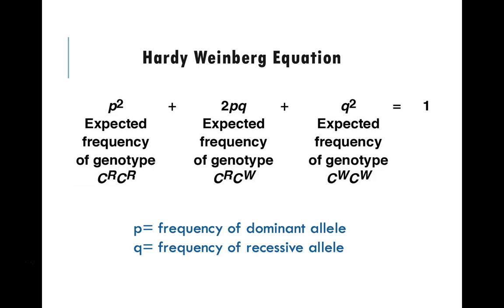If it is a completely dominant situation, you cannot distinguish, you cannot look at the individuals and see the difference between p squared and 2pq individuals, just like you cannot look at them and say you are homozygous for red or you are heterozygous.